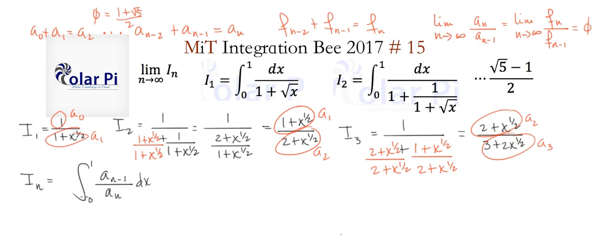Now what we need is limit as n goes to infinity of the integral i sub n. So that means that we write limit as n goes to infinity in front of this, which means we write limit as n goes to infinity in front of this. But then we could put this limit inside of the integral.